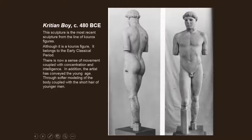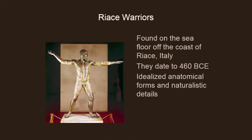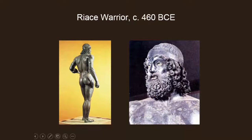There is concentration and intelligence here that is absent from the earlier figures, and a lot of that has to do with how much the Greeks learned over the centuries about how to create this. The same thing applies to the Riace warriors — idealized anatomical forms, but when you look at the expression on the face you can see a move toward knowledge. We're going to see this idea of emotion or pathos in the Hellenistic age as well. So the lines get blurred and overlap a little bit.